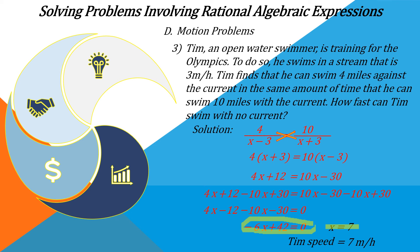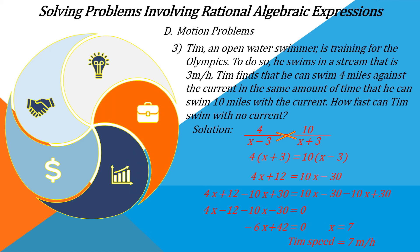Now this is Tim's speed without current. Let us check if our answer is correct. Going back to the main equation: 4 over (7 minus 3) equals 10 over (7 plus 3), which gives us 1 equals 1. Therefore, our answer of 7 miles per hour for Tim's swimming speed is correct.